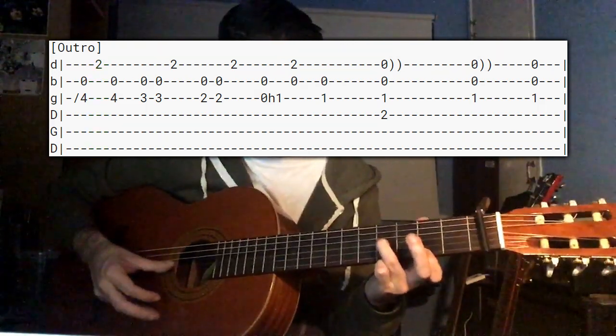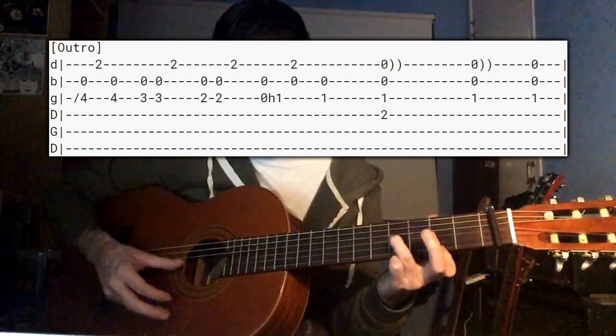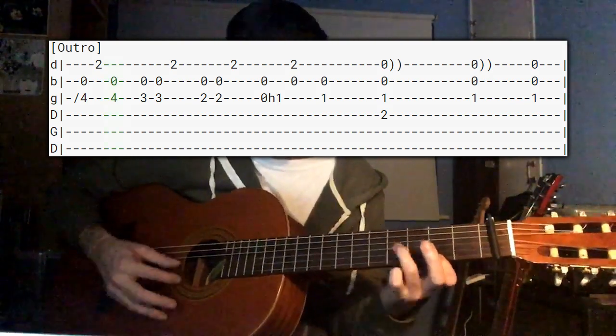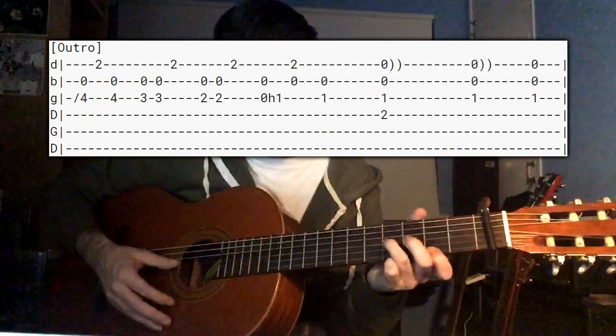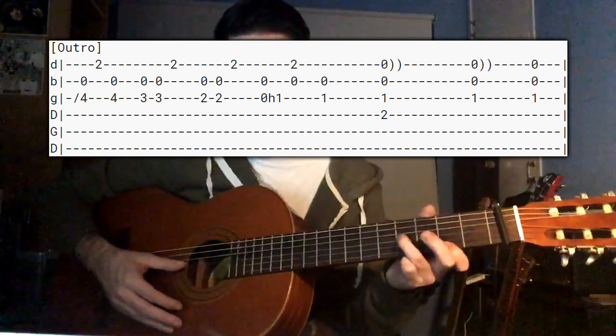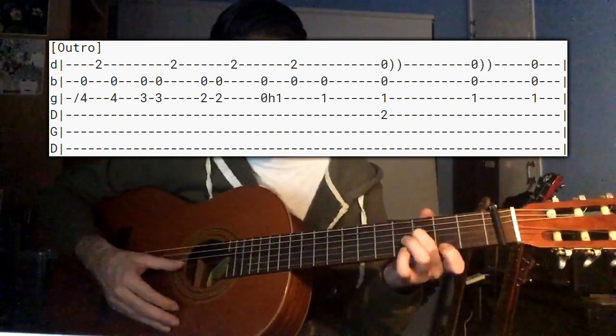And then you go back to playing the 2nd and 3rd strings. So 4th fret, 3rd string, open 2nd. Then you move from the 4th fret of the 3rd string down to the 3rd fret of the 3rd string.